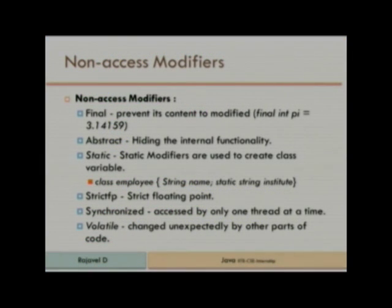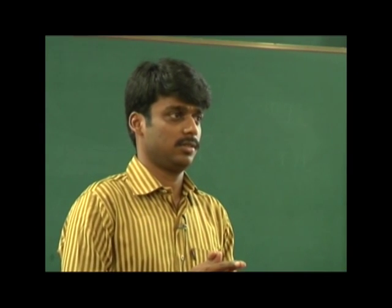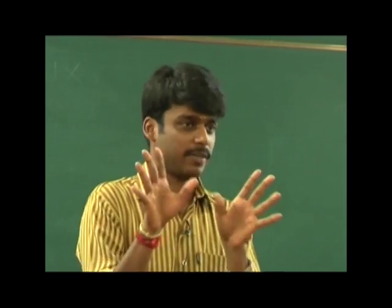Let me see the non-access modifiers. First is 'final' — it prevents its content from being modified. If a class is declared final, we cannot extend that class, meaning we cannot inherit it. Next is 'abstract'. Abstract is like a simple overview of something — a high-level view. I will explain later how abstract works in Java.